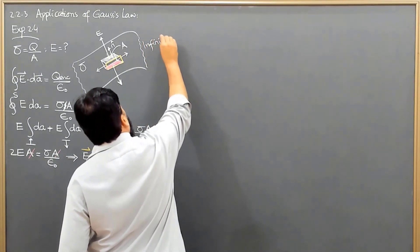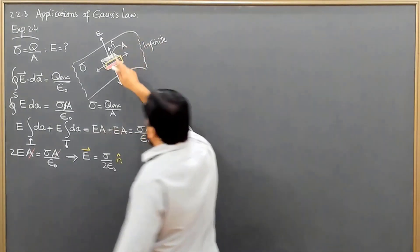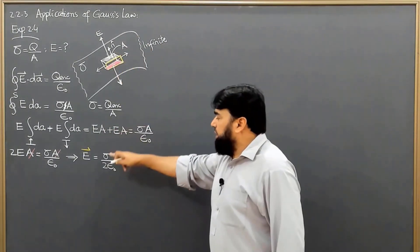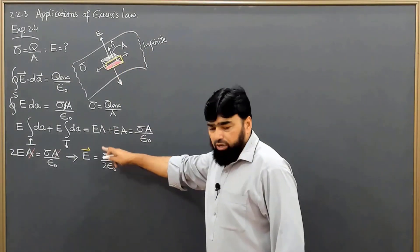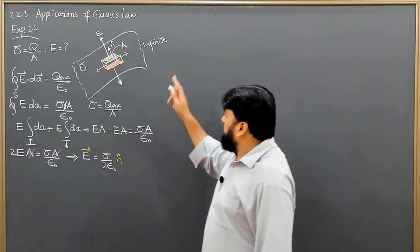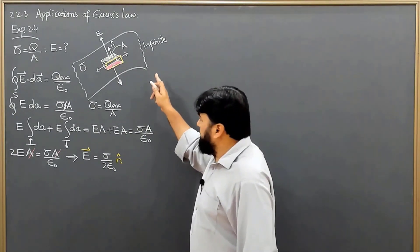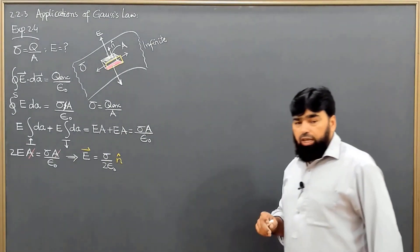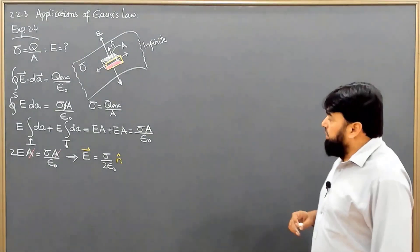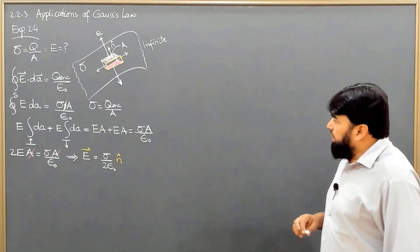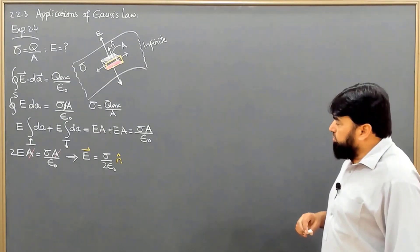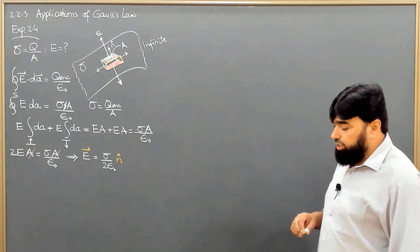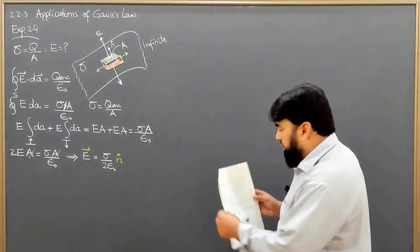This is not finite. If this were finite, we would have a decreasing field. But this is infinite, so that's why we have a constant field and it will not be decreasing.